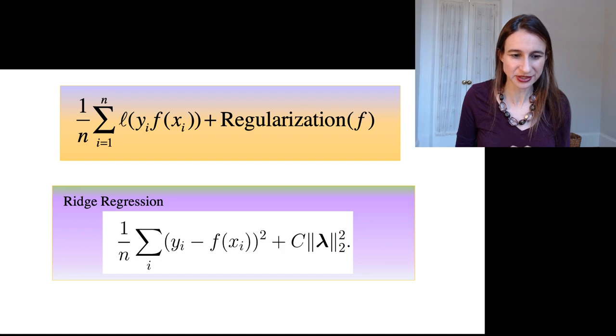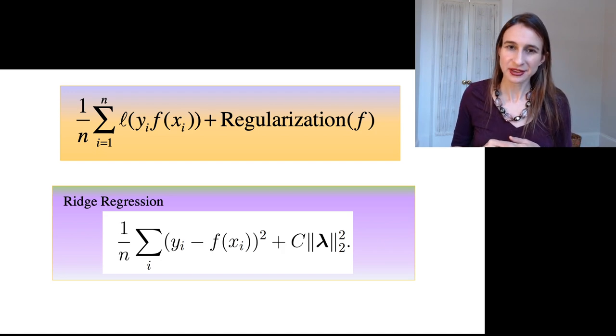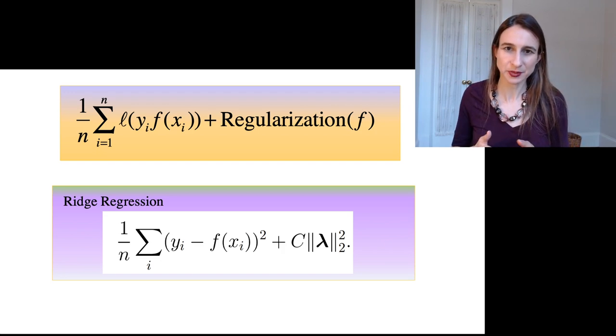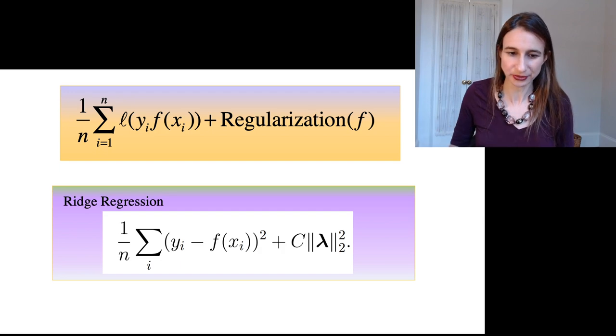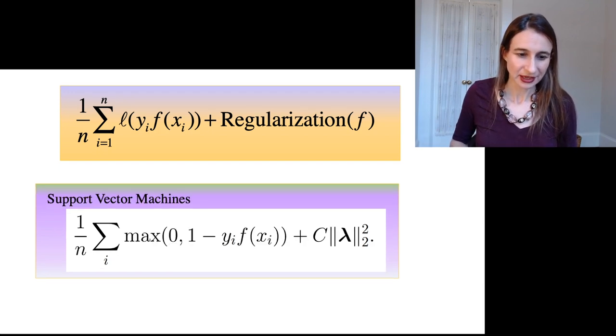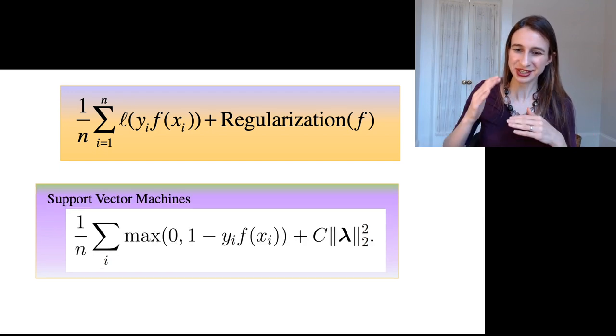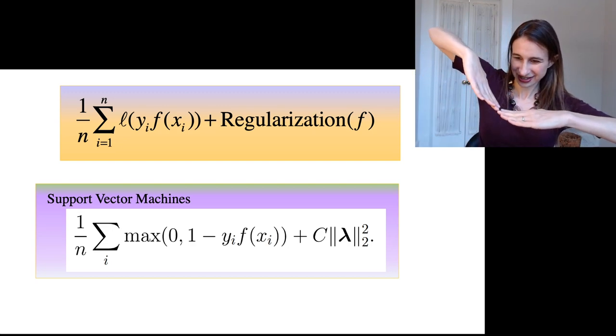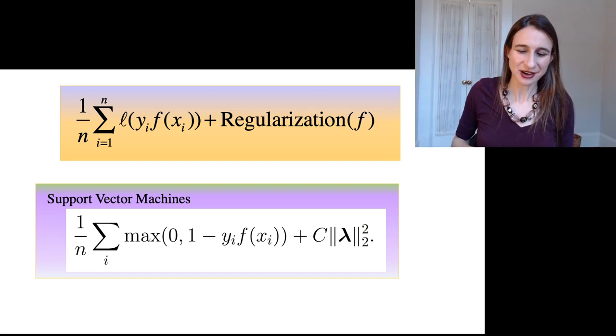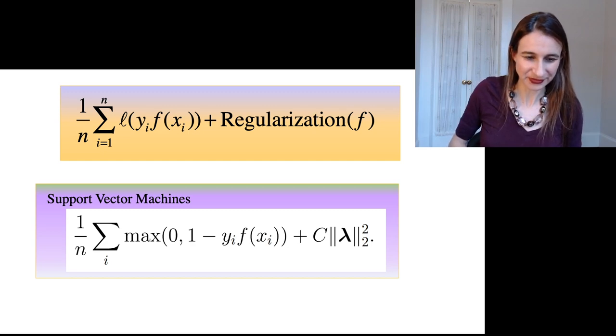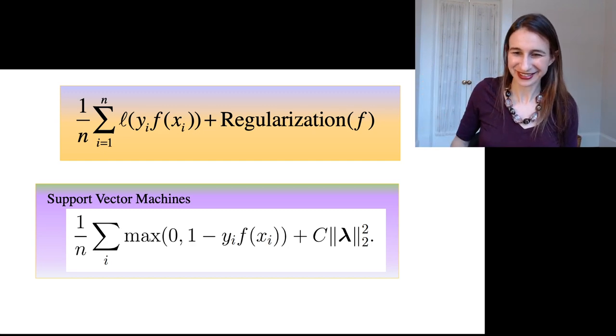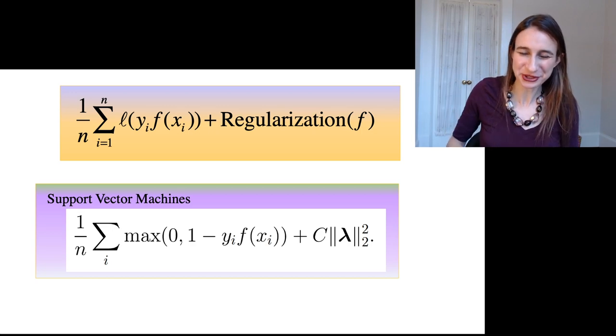And then this is just some special cases of it. So ridge regression is the algorithm that minimizes squared loss regularized with L2 regularization. And then support vector machines use the hinge loss that I mentioned to you earlier, this hinge loss function with L2 regularization. And again, we'll talk about these. Each one of these has its own lecture dedicated to it.